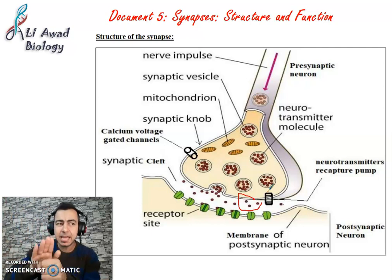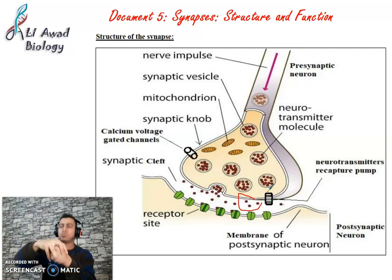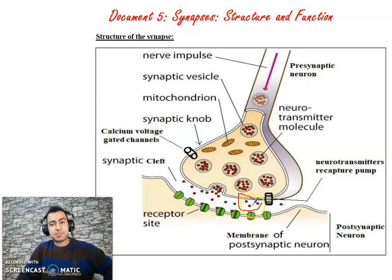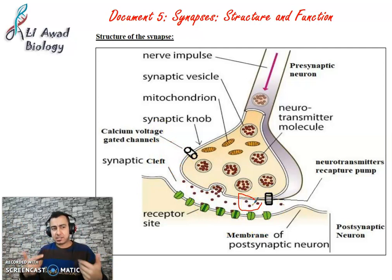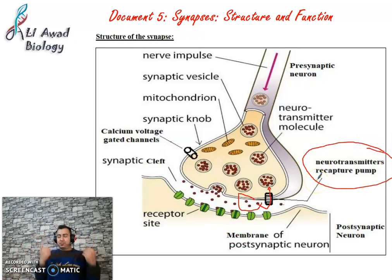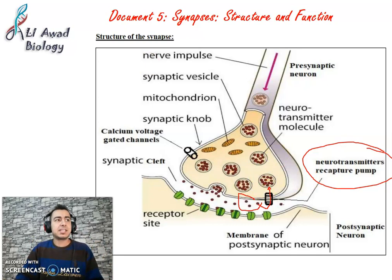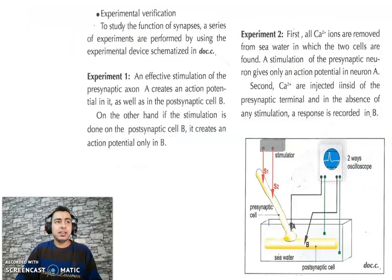If a neurotransmitter stays on its receptor for a long time, the channels remain open longer and more action potentials are produced — this can happen in cases of certain drugs or muscle spasms. When the neurotransmitter finishes its function, it is degraded by an enzyme, and most of it is reabsorbed by a neurotransmitter recapture pump back into the pre-synaptic neuron to be synthesized again.